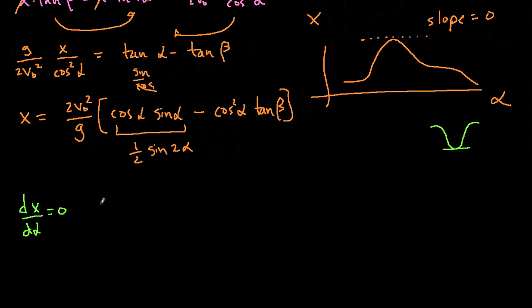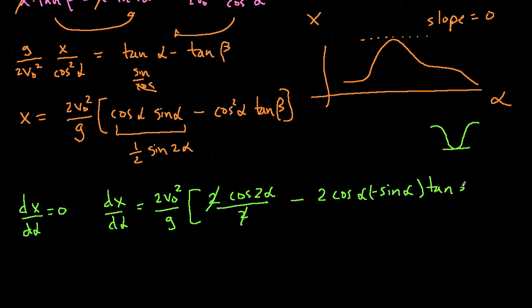So, let's take the derivative of this function. So dx d alpha is equal to 2v squared over g. Remember now we have 1 half sine 2 alpha. So the derivative of that is 2 times cosine of 2 alpha. And then we have that 1 half that we had gotten when we converted this to 1 half sine 2 alpha. So those cancel. Minus 2 cosine alpha, and then derivative of cosine of alpha is minus sine alpha. And then that's all times tangent of beta. And then we're going to set that equal to zero.